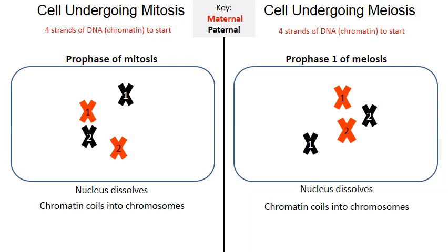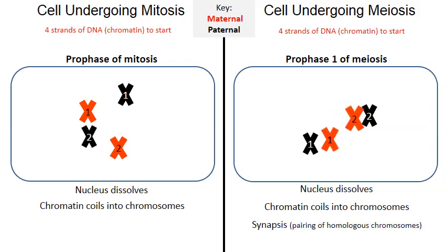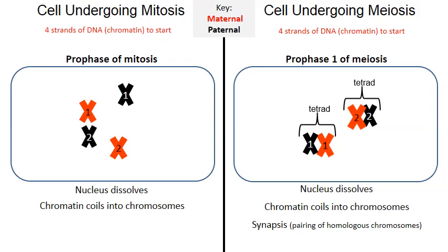As we go into prophase one of meiosis, what happens next is synapsis. The two chromosome number ones are pulled next to one another by spindle fibers, and the two chromosome number twos are pulled next to one another, creating groupings called tetrads. Tetrads are made from two chromosome number ones or two chromosome number twos — you will not see a chromosome number one paired with a chromosome number two, or a chromosome 13 paired with a chromosome 19. Tetrads are created from the homologous chromosomes.